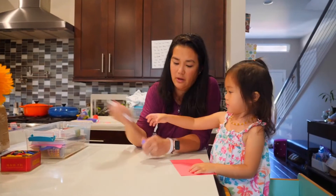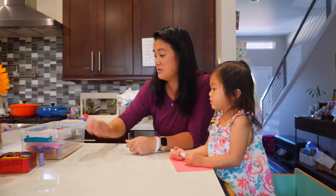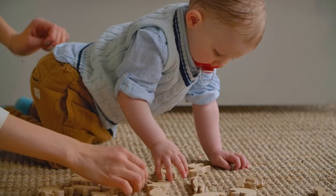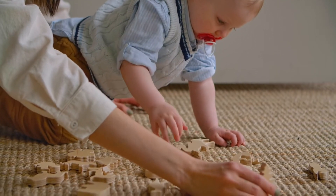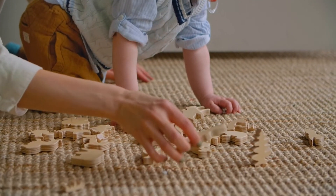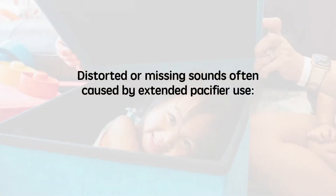In most cases, articulation issues just happen and there's no clear cause. There are, however, a few instances where we can point to a specific cause. The first is pacifier use. If kids use pacifiers for too long, sometimes they'll start to try to talk around the pacifier and create bad habits in the way they use their mouth for speech. This means that sounds requiring them to use the tip of their tongue might be distorted or missing — these kids often have issues with the 't,' 'd,' 's,' 'z,' or 'n' sounds.